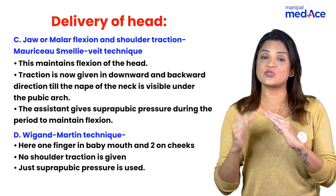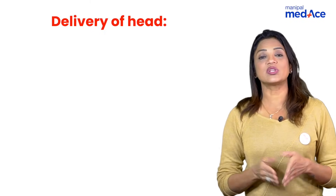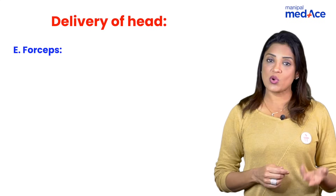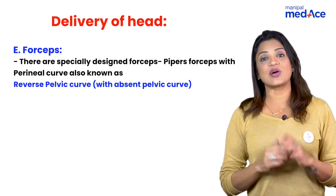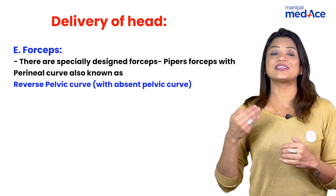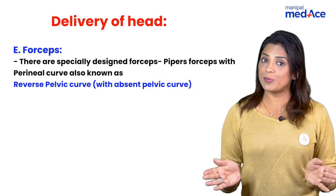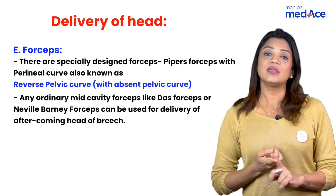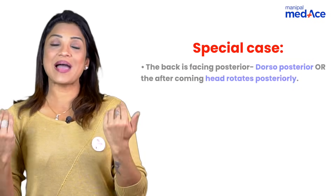The last technique for the after-coming head, after all other maneuvers have been used, is Piper forceps. Piper forceps is designed specifically for the after-coming head — it does not have a pelvic curve but has a perineal curve, known as the reverse pelvic curve. It is not available in India; in India we can use the Das forceps and the Neville-Barnes forceps.